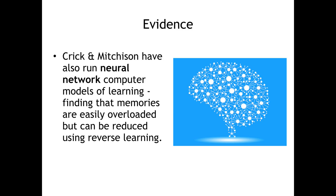Crick and Mitchison also ran something called a neural network as extra evidence for their theory. A neural network is basically an artificial brain — lots of individual computers or software linked together, a machine that learns the same way we do. The neural network gets easily overloaded: memories get gummed up, too much useless stuff accumulates. So what happens is the neural network starts to reverse learn — it actively undoes all the useless memories it has. If a computer learns to actively unlearn things, remember your brain is far more complicated than a computer, so it stands to reason that we know how to do that too.